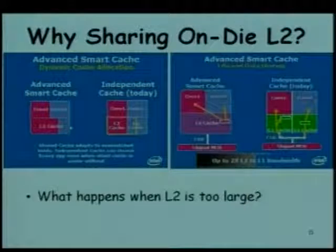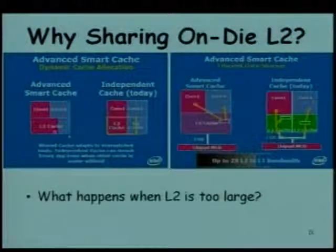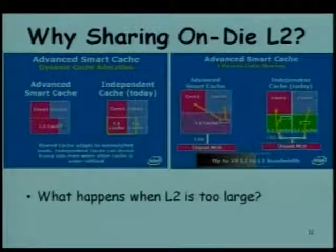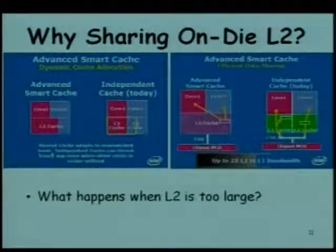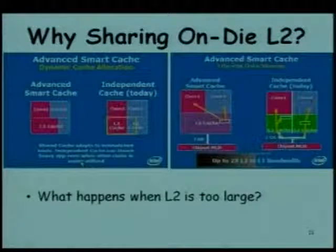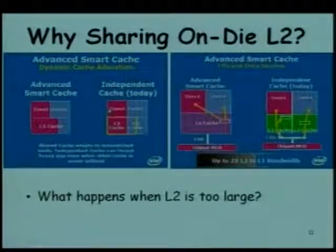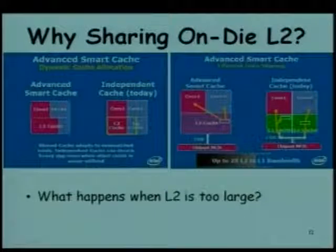Intel says that sharing the L2 cache is the way to go. On the other hand, AMD has separate L2 caches while the L3 cache is shared. Intel's argument is that if different cores require different amounts of data, they can dynamically adjust rather than increasing the cache miss rate for some processor. The shared cache adapts to mismatched loads — independent caches can cause problems for cache-heavy applications when other caches are underutilized.